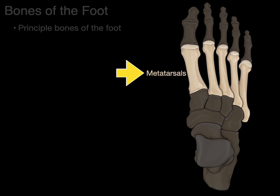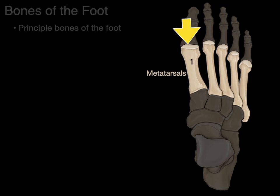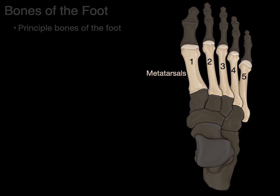Next we're going to go to metatarsals. Metatarsals gets its name from Latin meaning after the ankle or next in line — that prefix meta meaning after or next, after the tarsals. There are five metatarsal bones. The first one articulates with the big toe, then the second, third, fourth, and fifth metatarsal bones. These bones have particular function in attachment for ligaments and tendons, and for helping to form the arches of the foot. Each metatarsal has a head and a base.